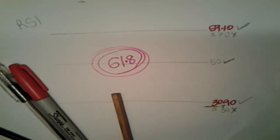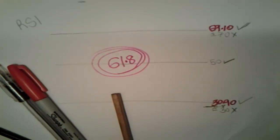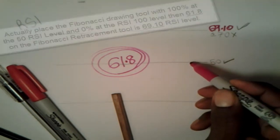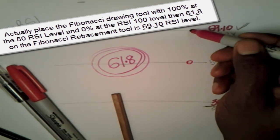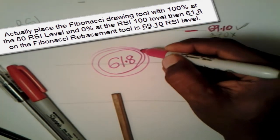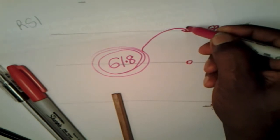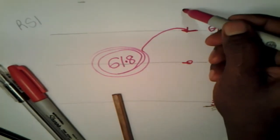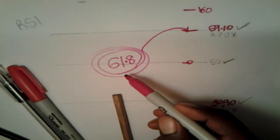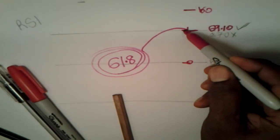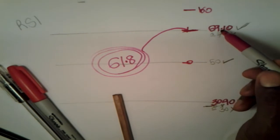All of them. And how so? If you put 0 here on a Fibonacci retracement tool, you'll find that right here is where you get this number. 0 here, 100 on top, so 100 on the Fibonacci retracement tool, you'll find that 61.8 is exactly at 69.10.